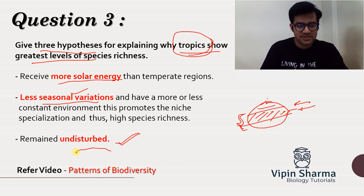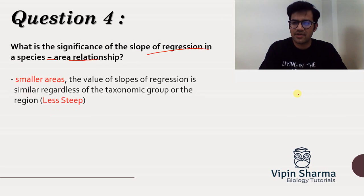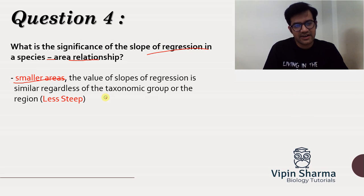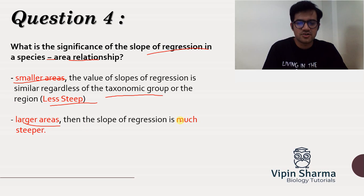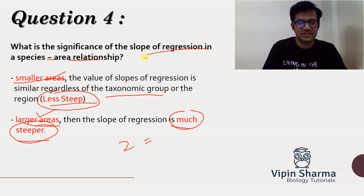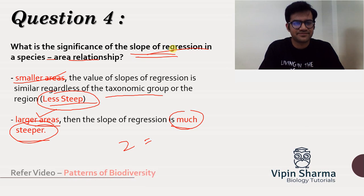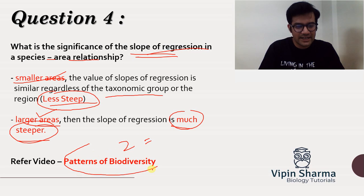The fourth question is: what is the significance of the slope of regression of the species-area relationship? We talked about the Z value. For small areas, regardless of the taxonomic group, the slope is less steep, meaning less biodiversity. When you increase the area, the Z value — the slope — is much larger. So larger area means a steeper slope and greater species richness. This is the significance of the slope: more steep the slope, larger the area and larger the biodiversity; less steep, smaller the area and less biodiversity.